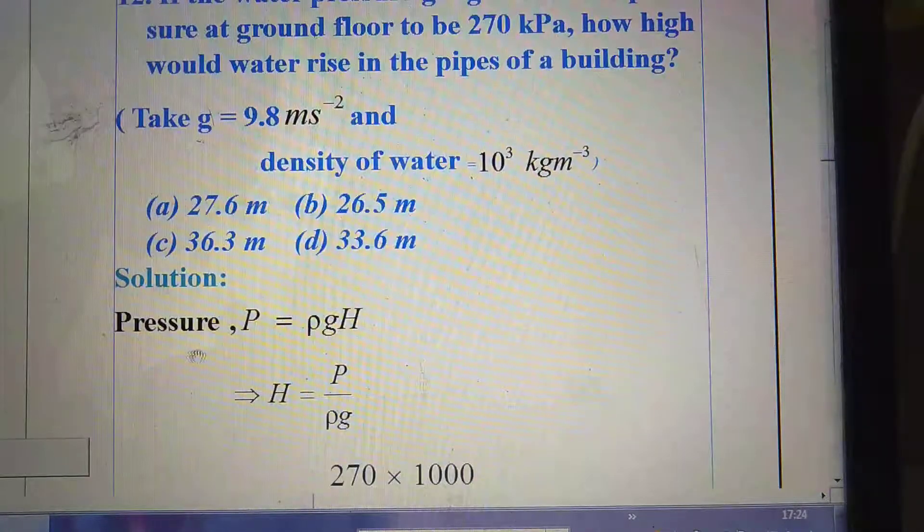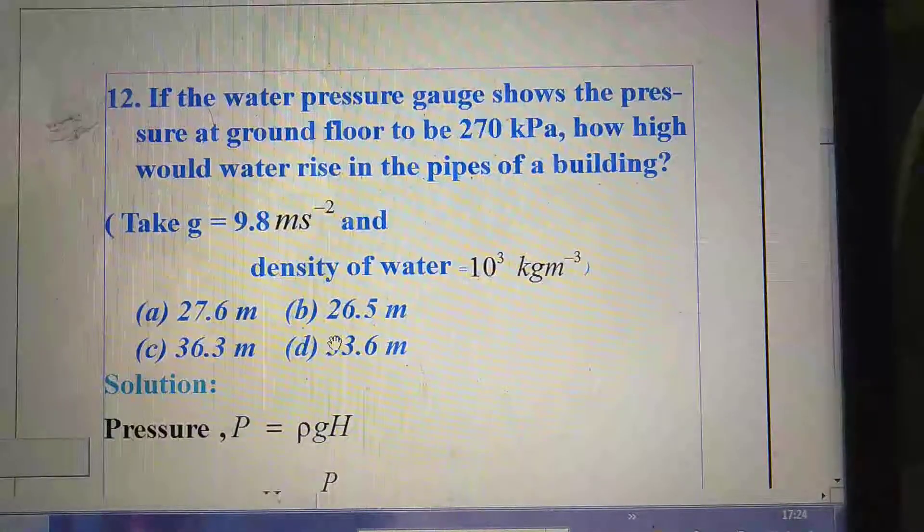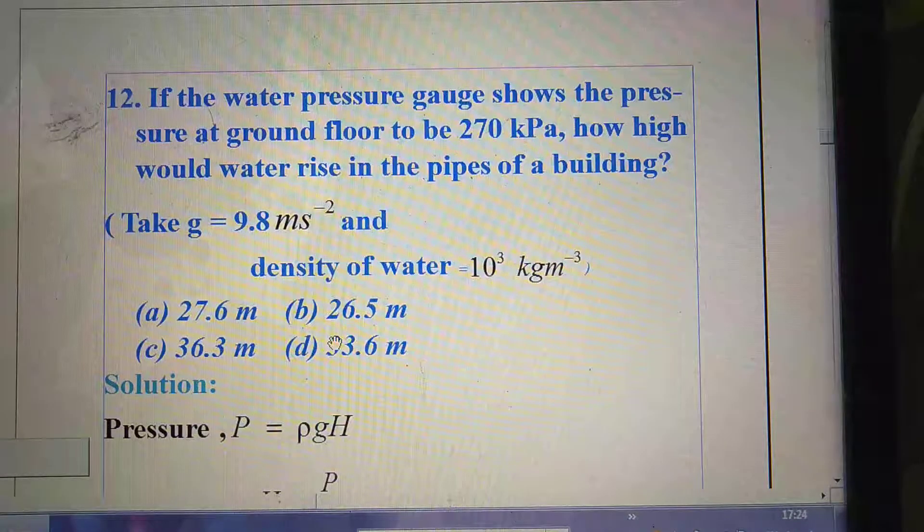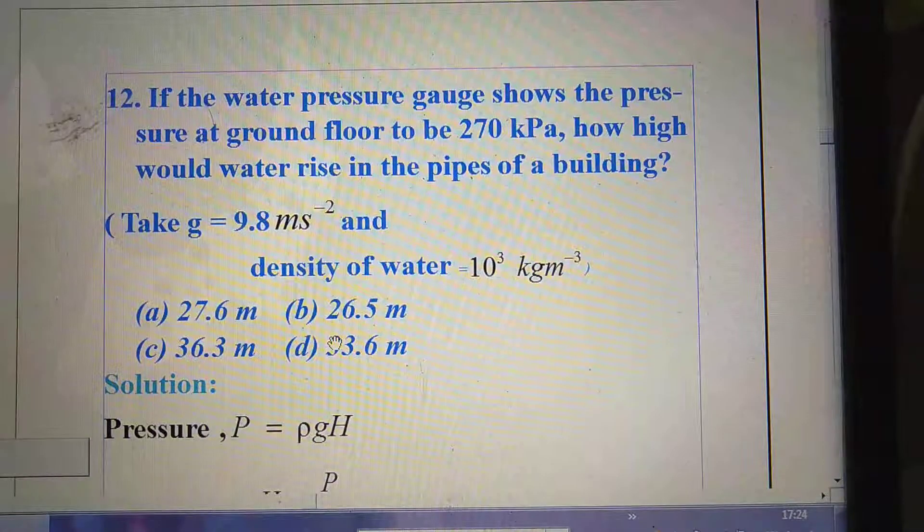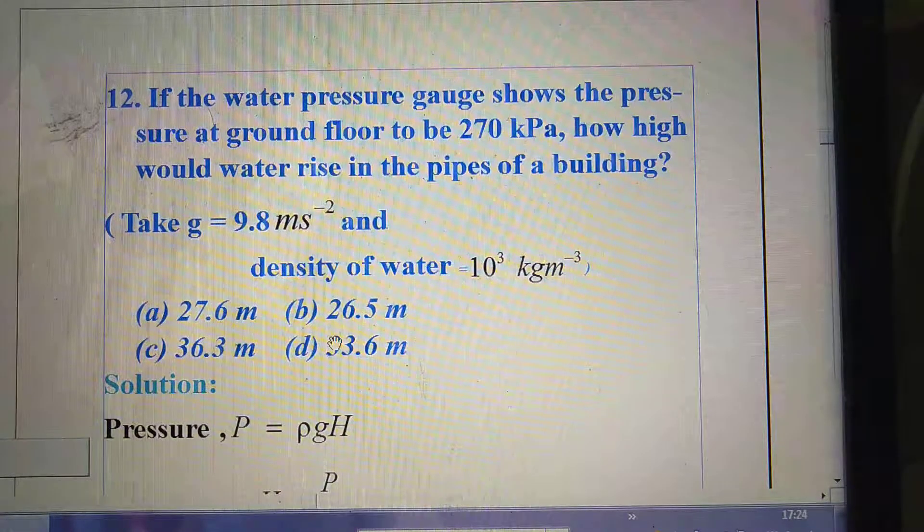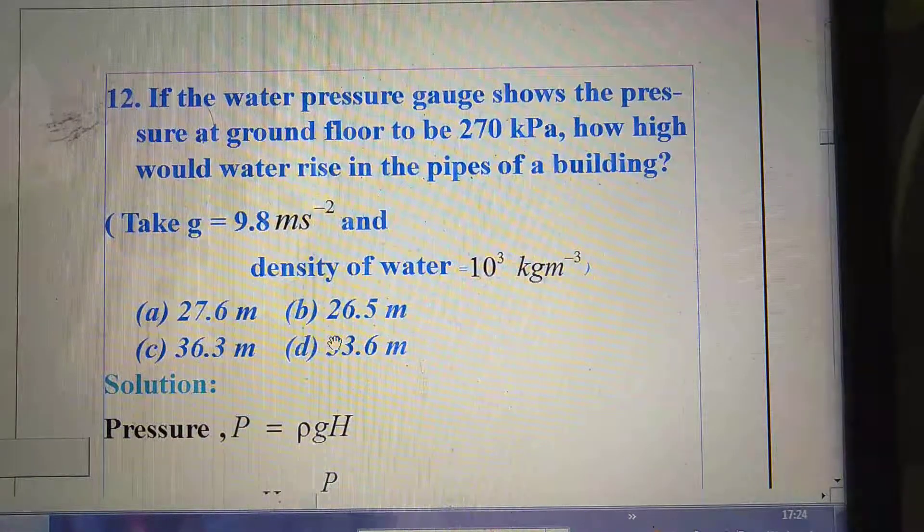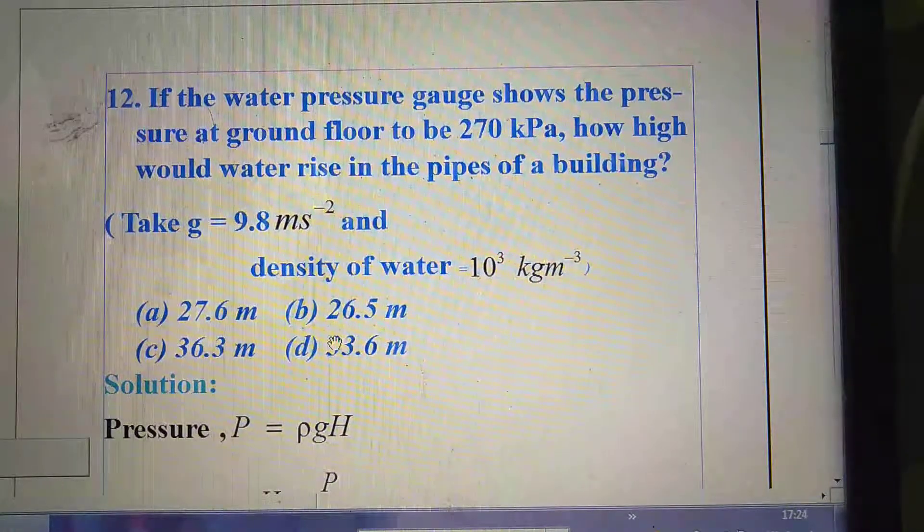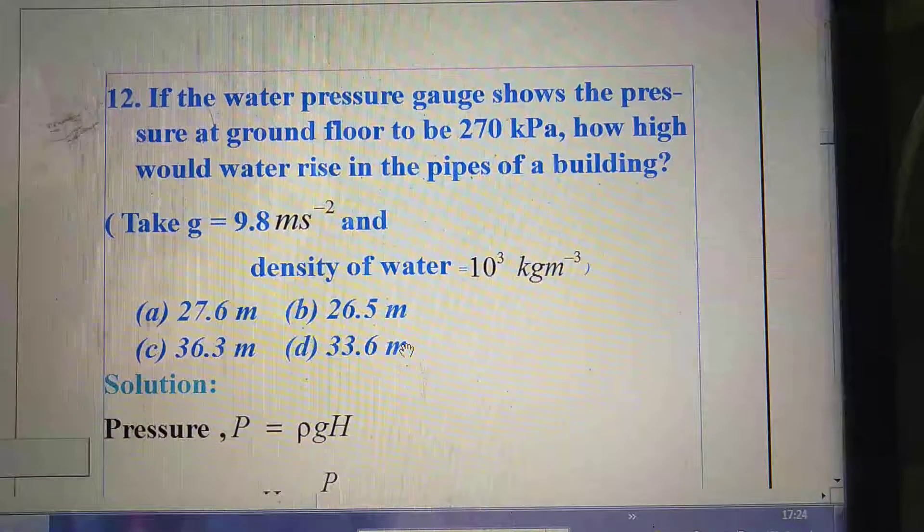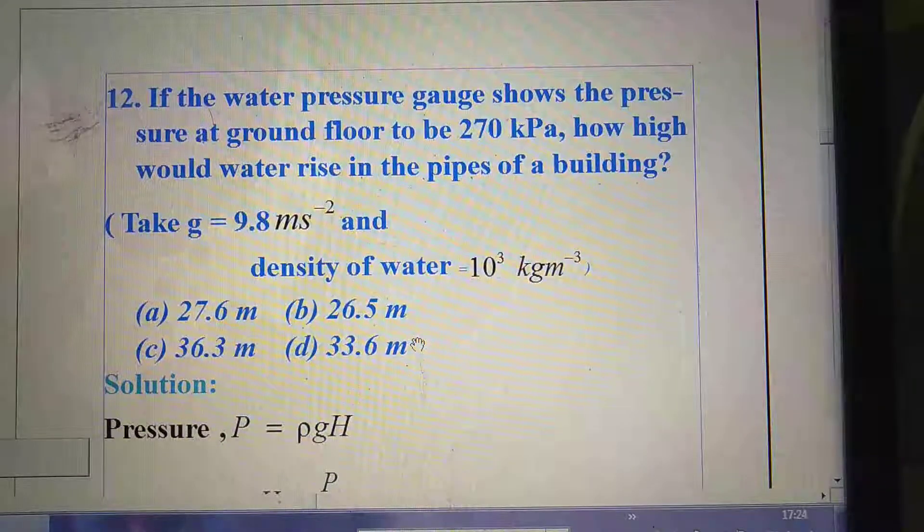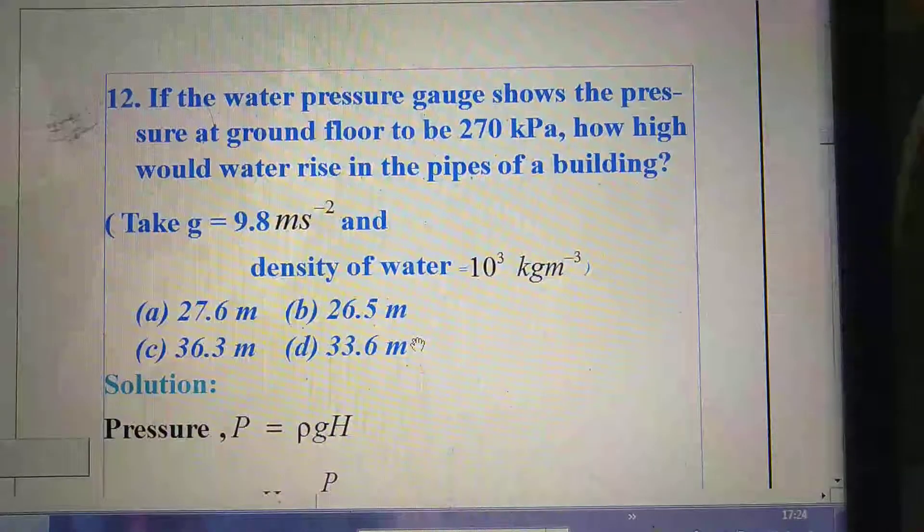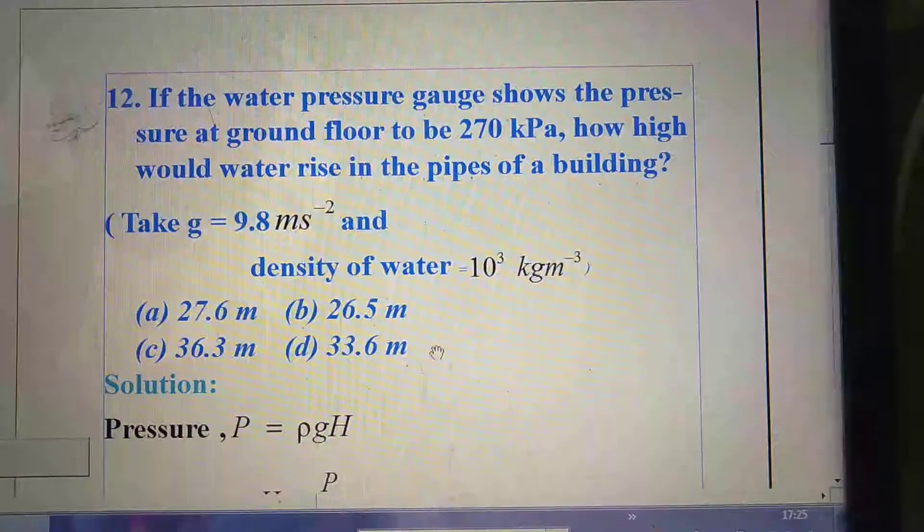Next question. If the water pressure gauge shows the pressure at ground floor to be 270 kilo Pascal, how high would water rise in the pipes of a building? Take G = 9.8 m/s² and density of water 10³ kg/m³. Here options are option A 27.6, option B 26.5, option C 36.3 and option D 33.6 meter.